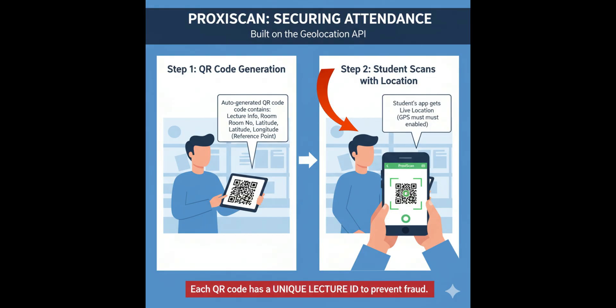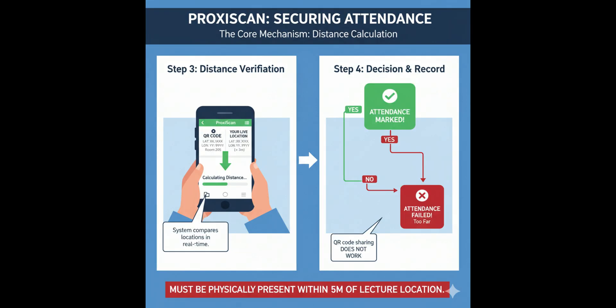When students scan this QR code to mark their attendance, they also need to have the location service enabled on their devices. As soon as they scan, the system calculates the distance between the student's current location and the lecture room's registered location embedded in the QR code. If the student is more than 5 meters away, the attendance will not be recorded.